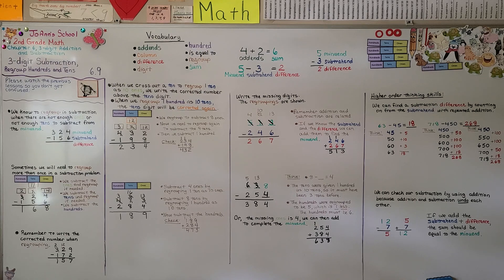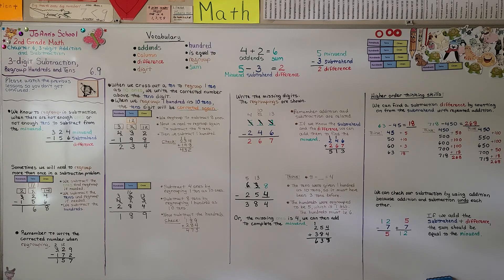So remember, we can find missing digits or even check our subtraction by using addition. Our next lesson, 6.10, we're going to be regrouping with zeros in the three-digit number. Keep doing your best — I'm proud of you. Have a wonderful day.